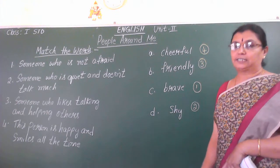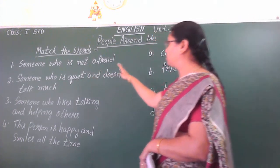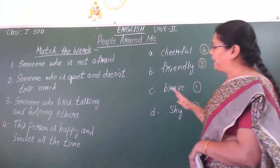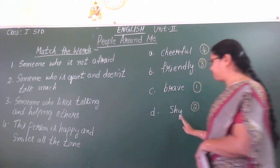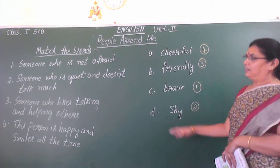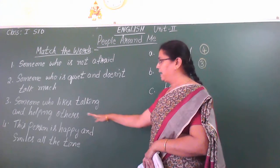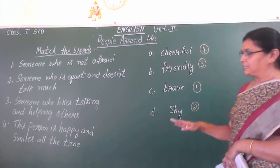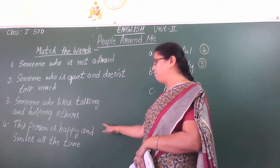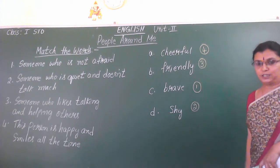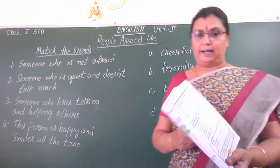What did you understand by this, children? Someone who is not afraid will always be brave. Someone who is quiet and doesn't talk too much will always be shy. Someone who likes talking and helping others is always friendly. And the last one — this person is happy and smiles all the time, so they will be cheerful. This one you have to mark and I'll send you that photocopy.